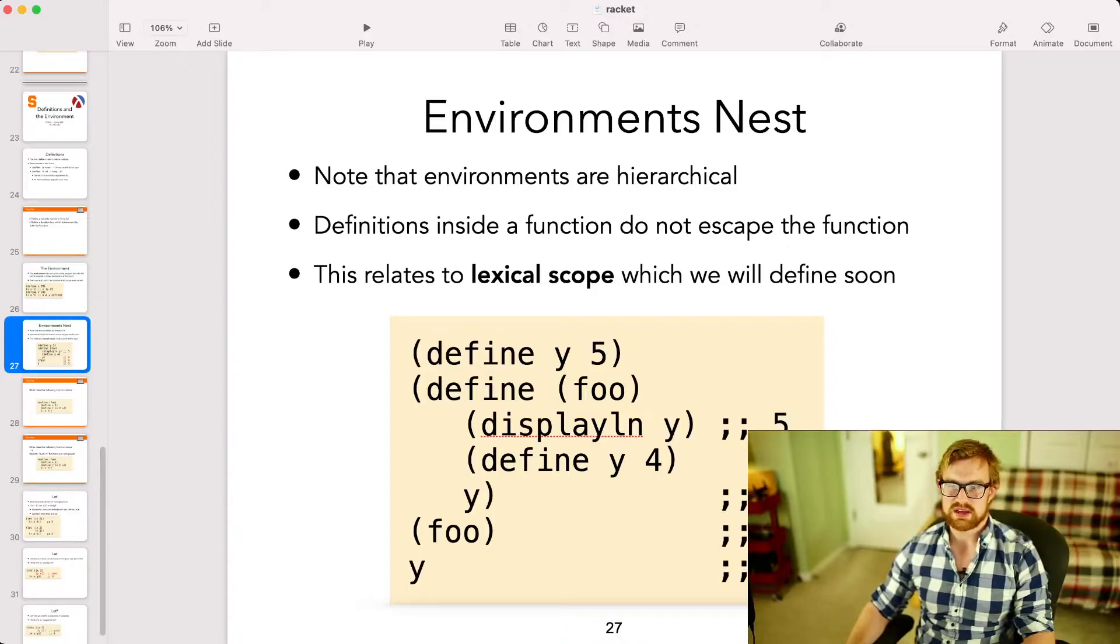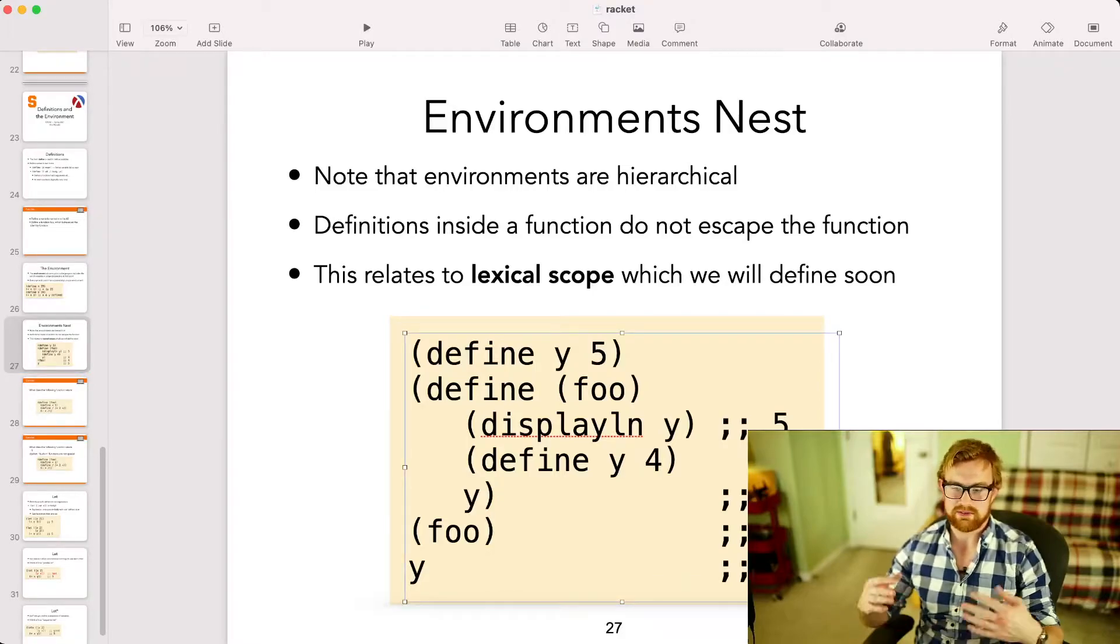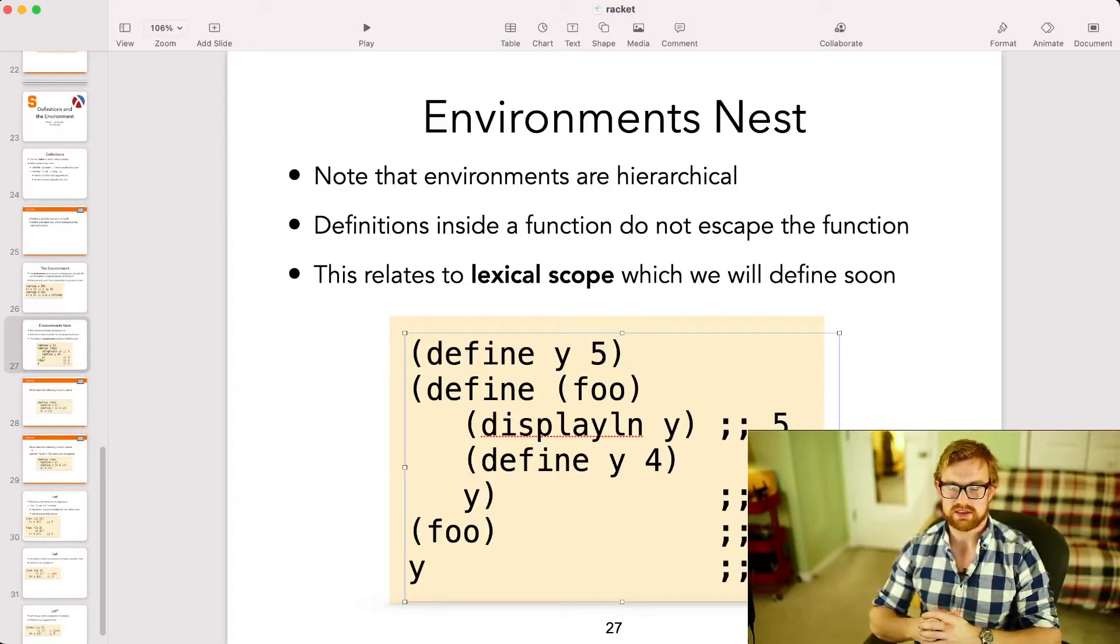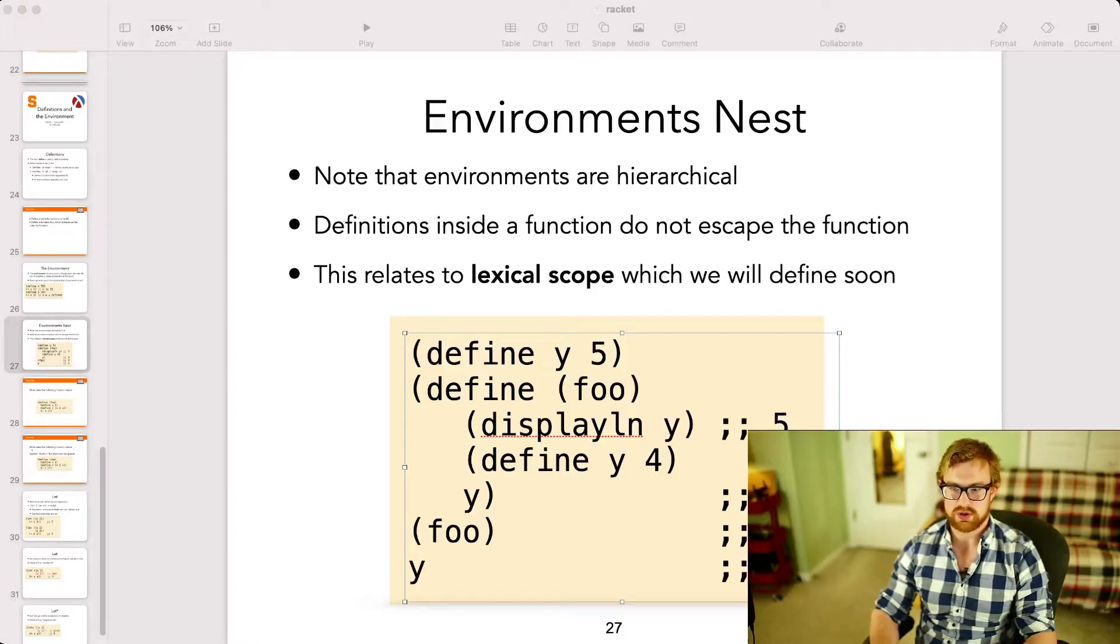Now another interesting property of environments is that environments nest. At the top of the program, I have some top level environment or the global environment, the default environment I start with. I can add definitions inside of functions, and I can add internal defines, and those scope to the function, but they do not escape the function. This relates to a concept named lexical scope, which is a concept we'll cover relatively shortly in class.